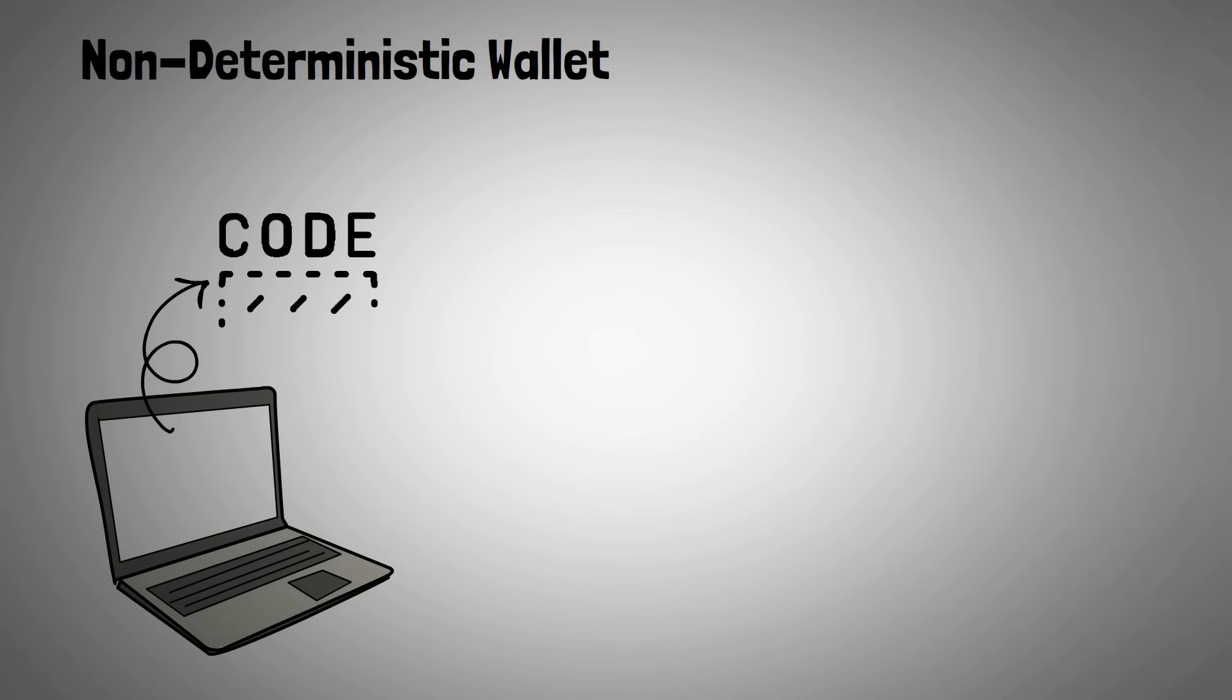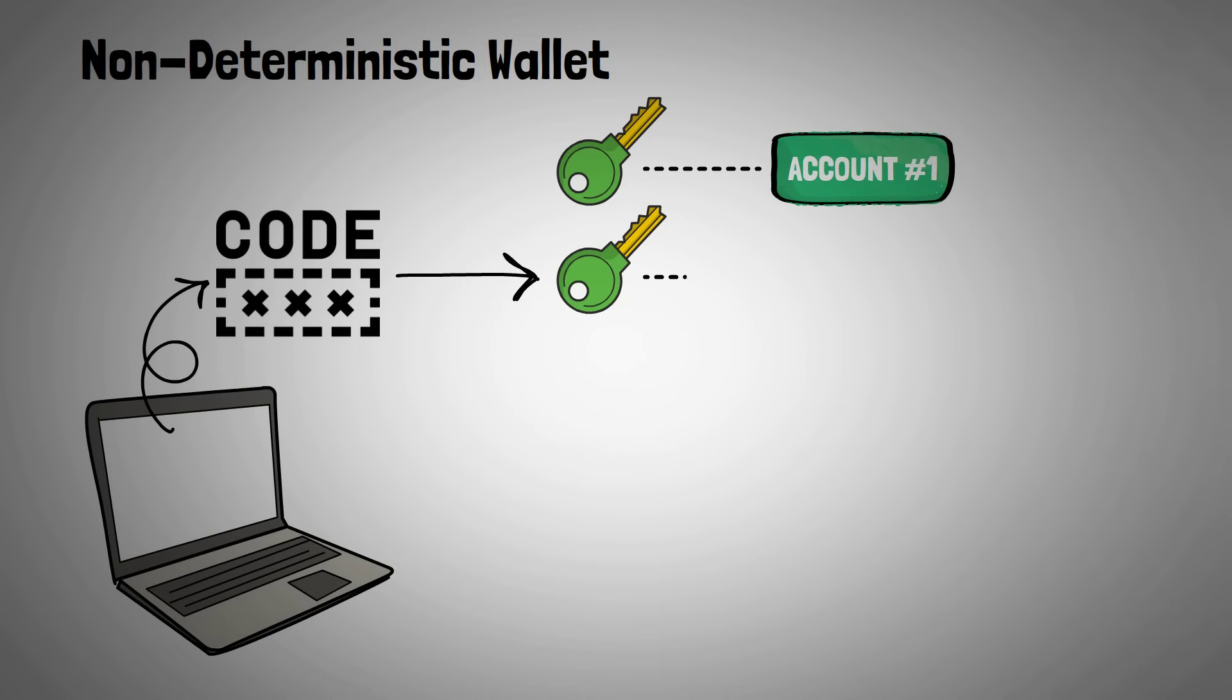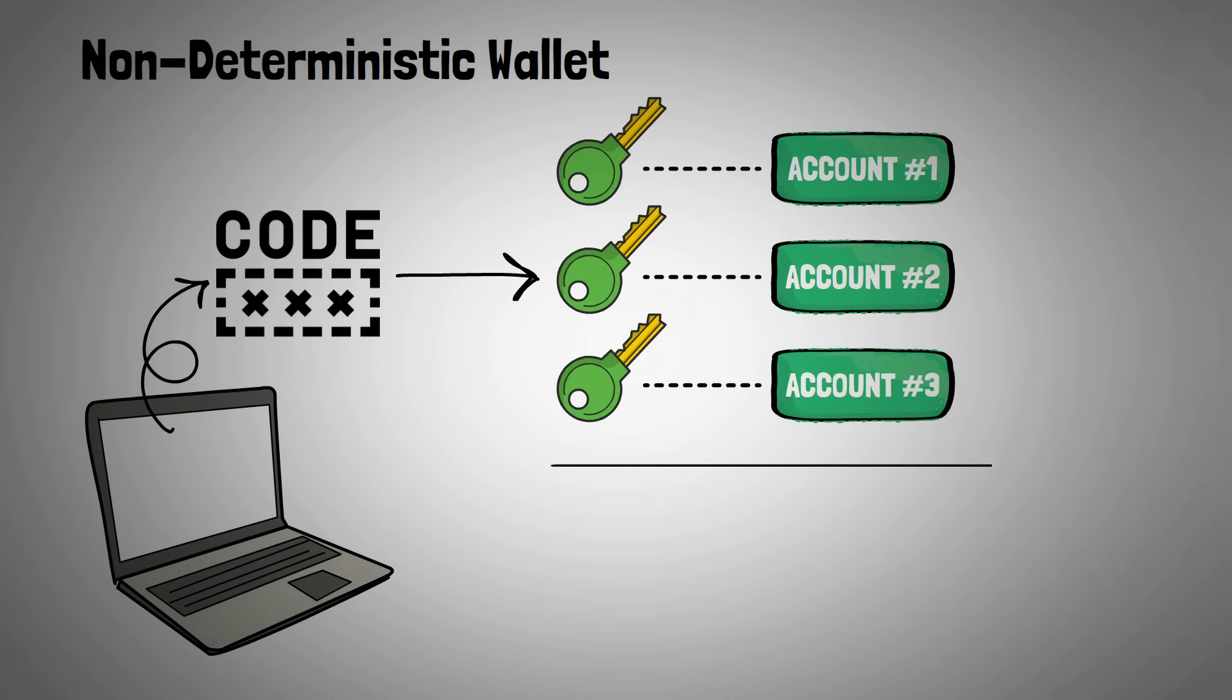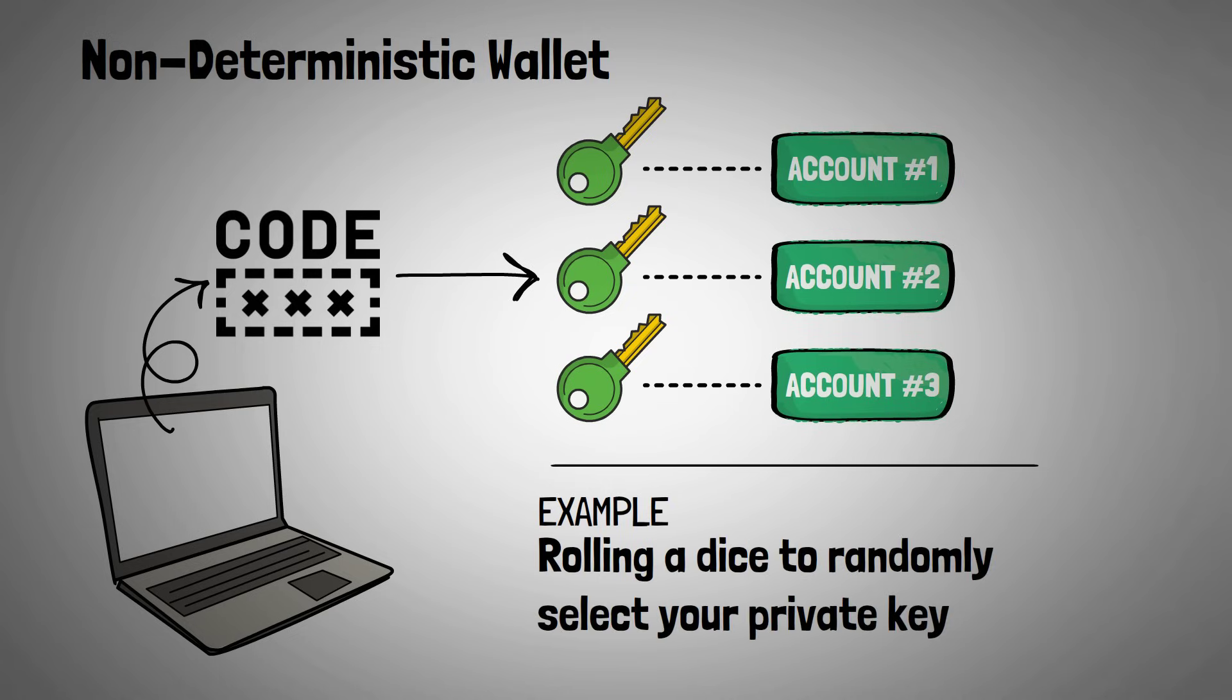A non-deterministic wallet doesn't rely on a seed phrase, but instead randomly generates private keys using cryptographic algorithms. This makes saving the wallet information really difficult. Instead of saving one master seed phrase, you'll need to save the private keys of each account. One example of a non-deterministic wallet is, say, maybe rolling a dice randomly to select your private key, where each roll indicates the next letter or number of the key.